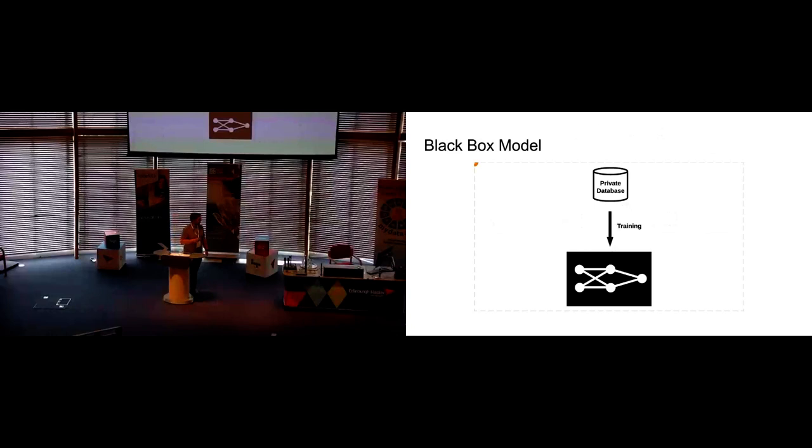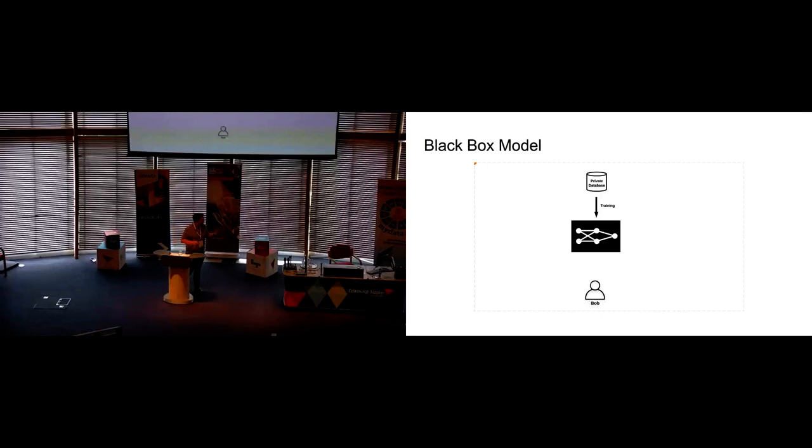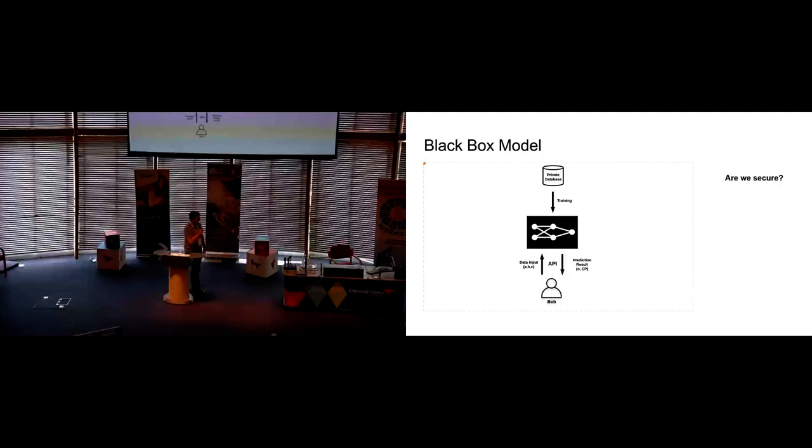But then what would be our ideal case? If we don't share the model and we don't share the data, we just have this black box model which we train a private database on and allow Bob access to some kind of API. He puts his data into this API and gets back some kind of outcome prediction, some Y value or Y hat value with a certainty factor. Are we still secure? No. This certainty factor can actually leak a lot of information about the underlying database.